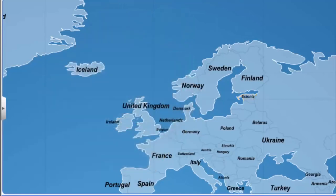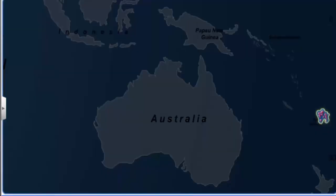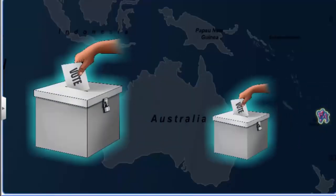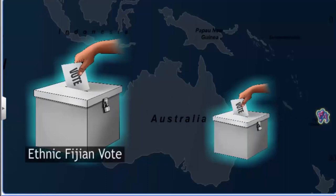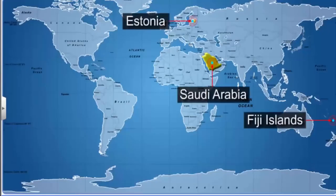Finally, let's look at Fiji, where the electoral system gives more value to the vote of an ethnic Fijian and less to that of an Indian Fijian. These countries cannot really be qualified as democracies because political equality for citizens is lacking.